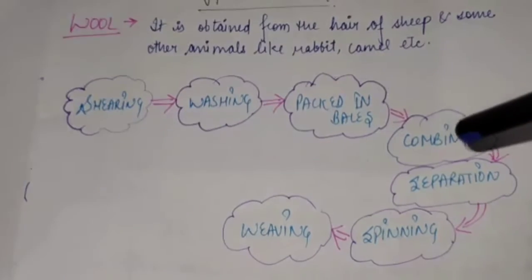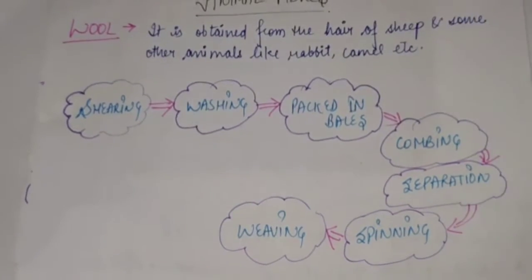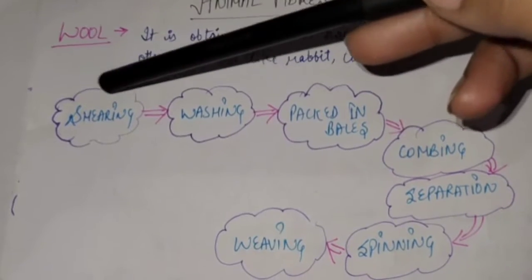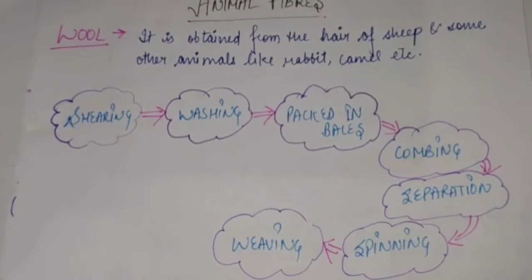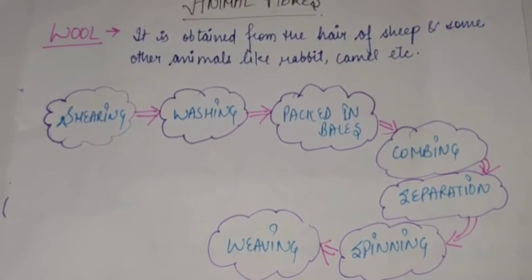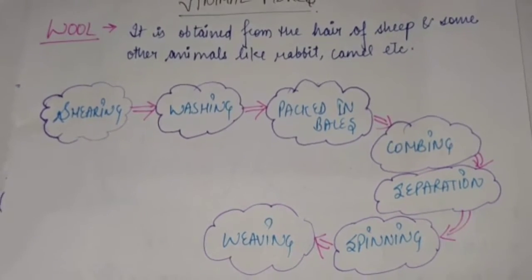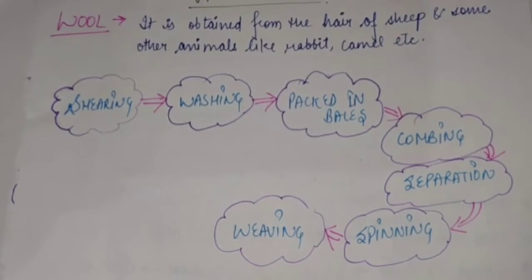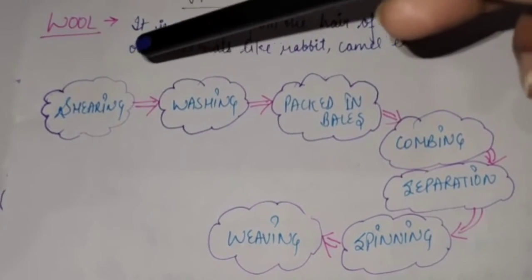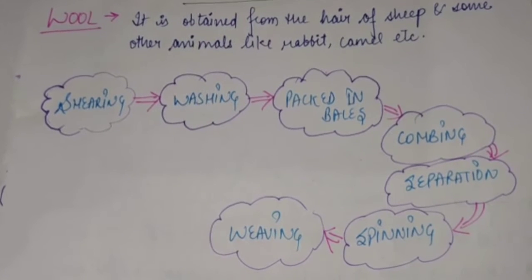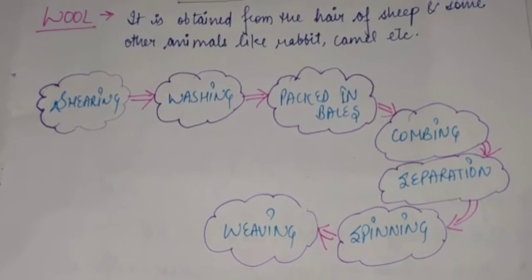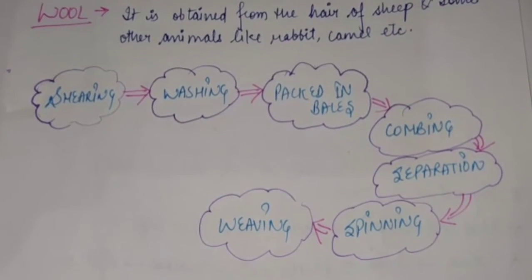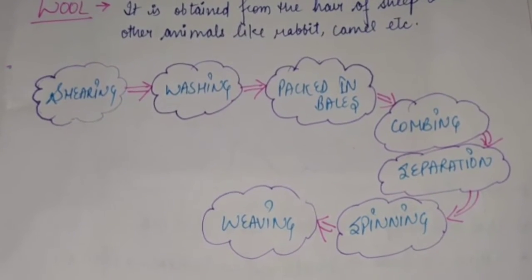Let us look at the process of formation of wool. The first step in the formation of wool is shearing. Shearing is the process of removal of fleece from the animal's body, which is also known as shaving. It does not cause any harm to the animal; in fact it makes the animal more comfortable because shearing is mostly done in the summer season.